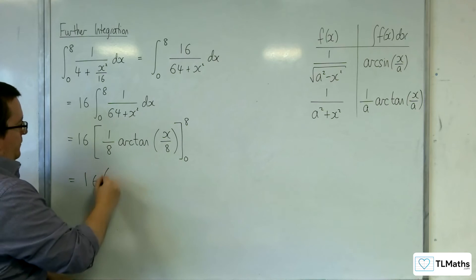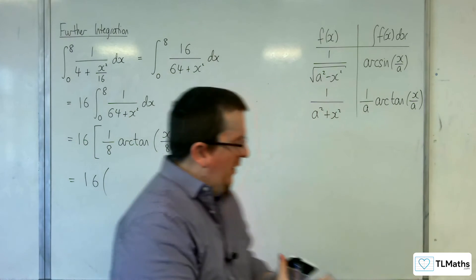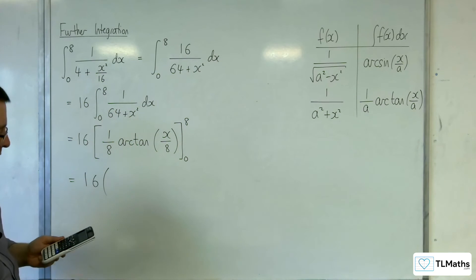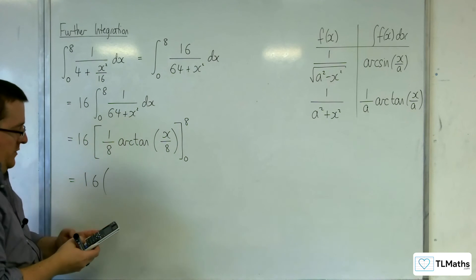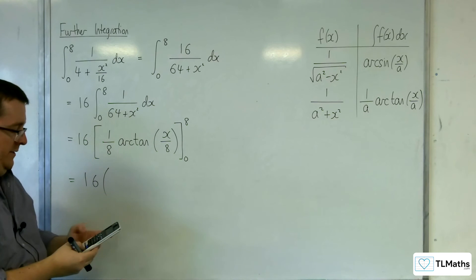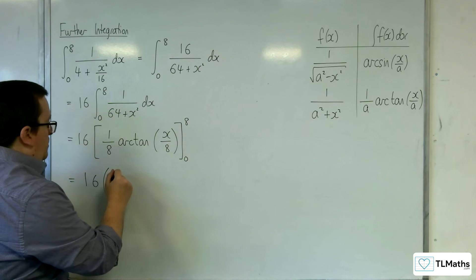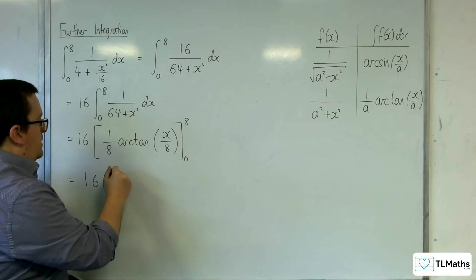So the first thing I'm going to do is substitute in the 8. So we're going to get arctan of 1. So inverse tan of 1 is pi over 4. And we're dividing that by 8. So 1 over 32 pi. So pi over 32.